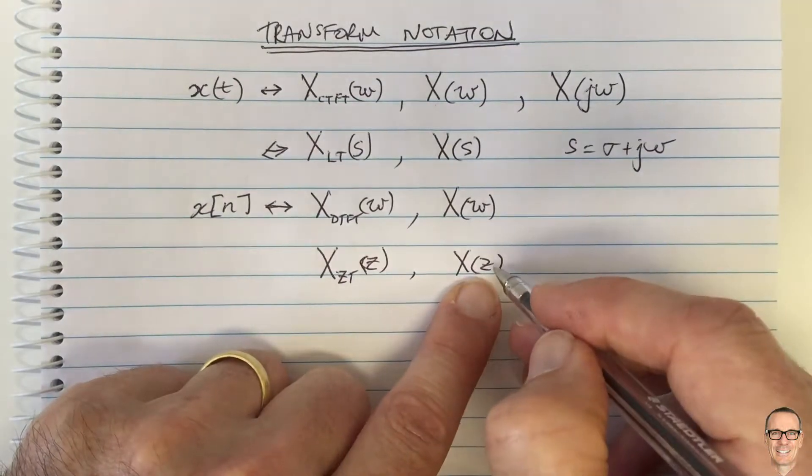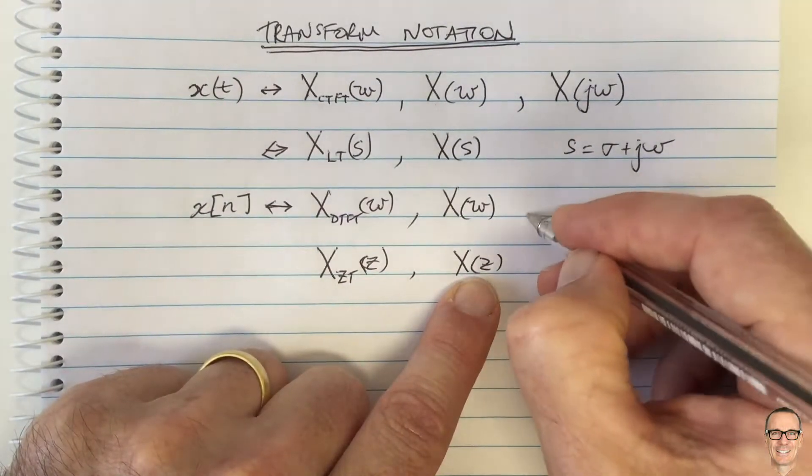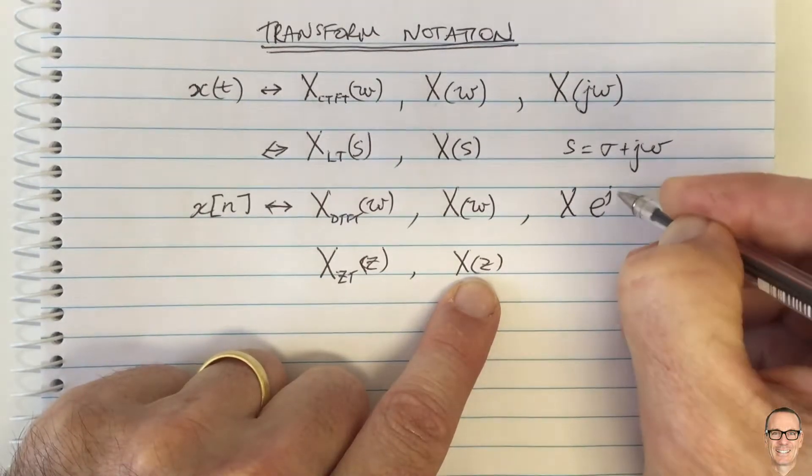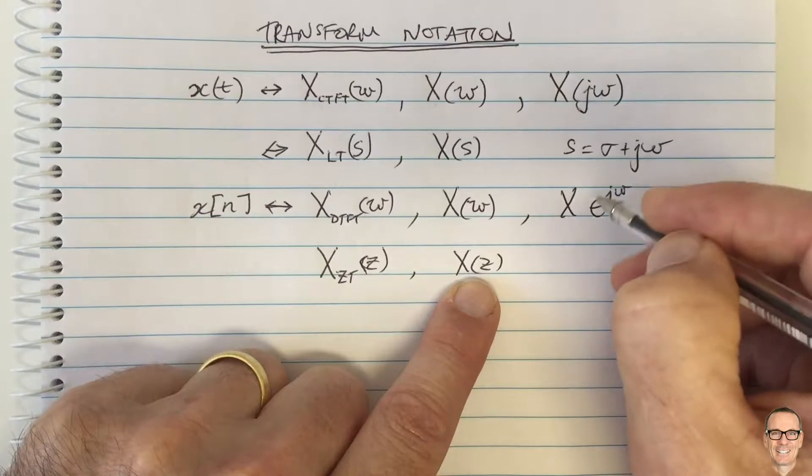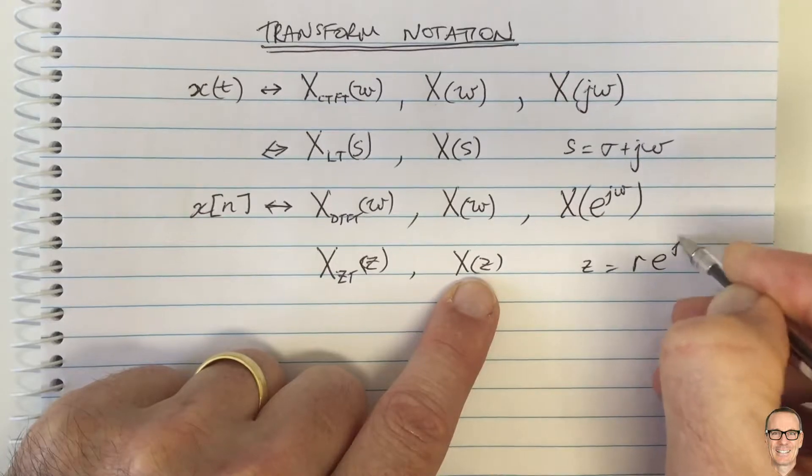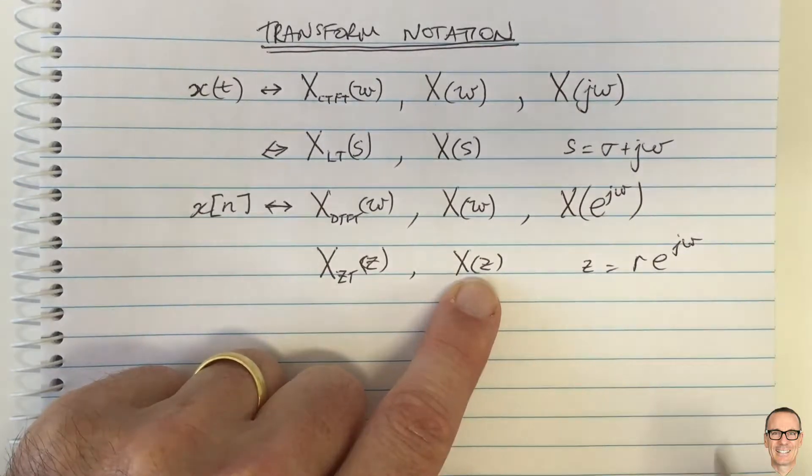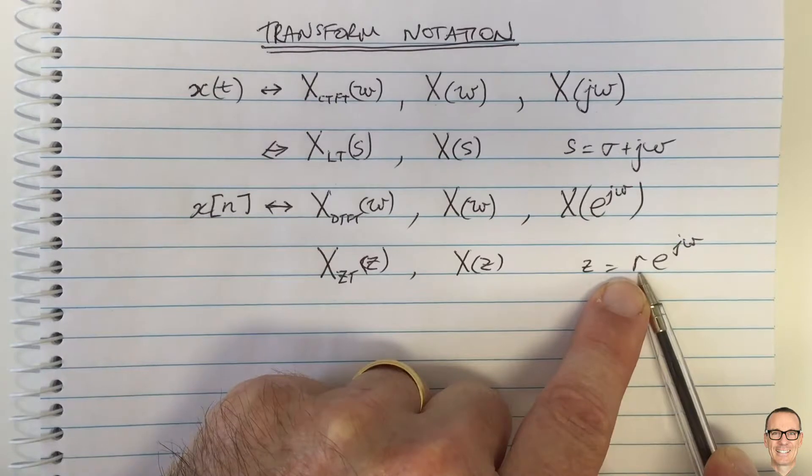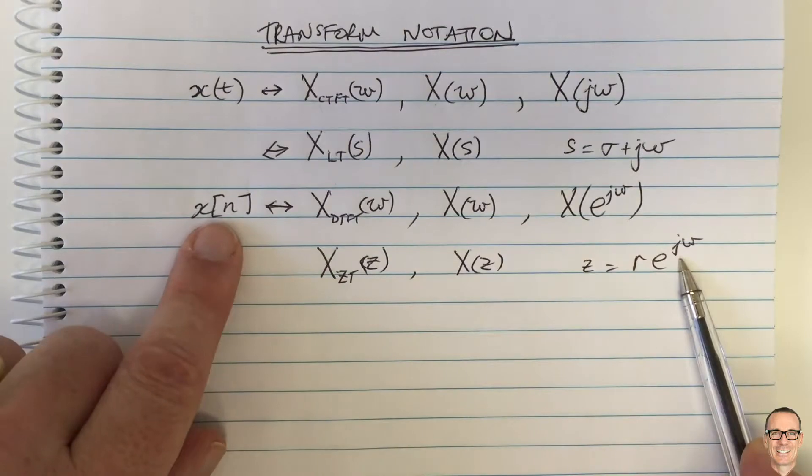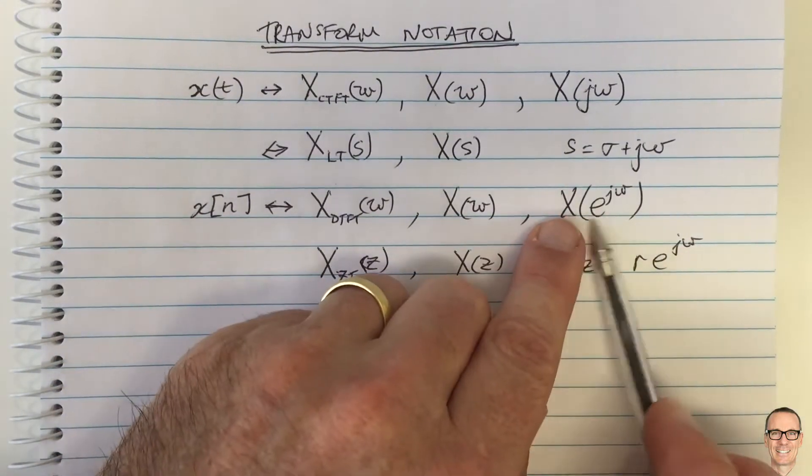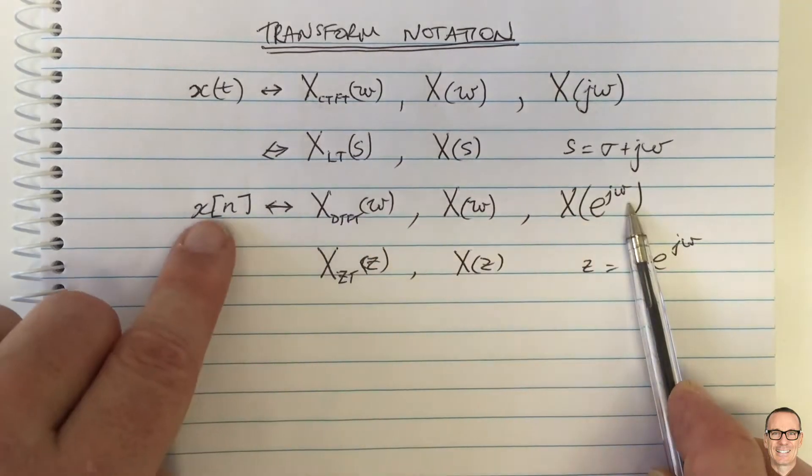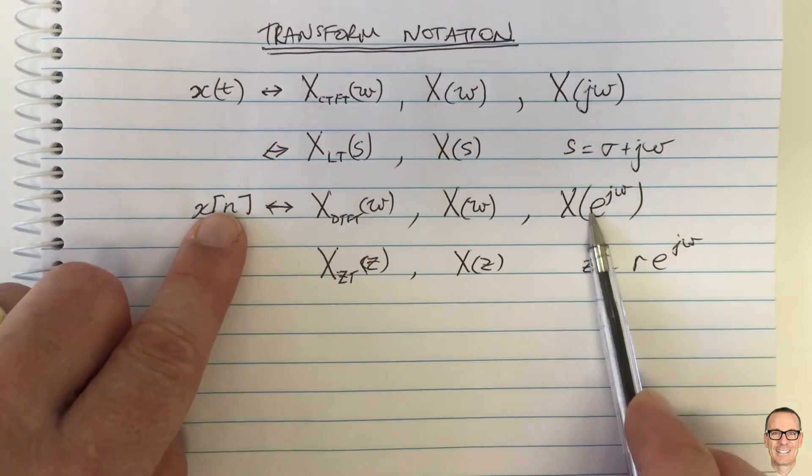And again, if Z is of a form where if we set the gain equal to zero, then we've got E to the J omega. And so Z equals R E to the J omega. And so if R equals one, sorry, not zero. If R equals one, then we've just got E to the J omega. And that is the Fourier transform for the discrete time Fourier transform. And that's what you've got. That's why the Fourier transform is often written X E to the J omega to indicate that it is a discrete time Fourier transform.